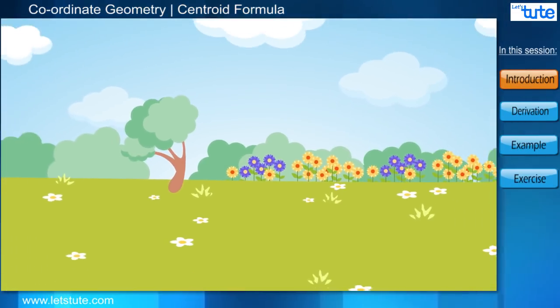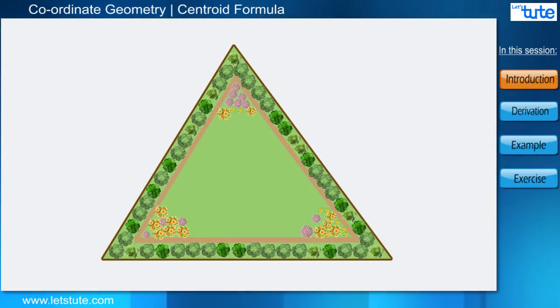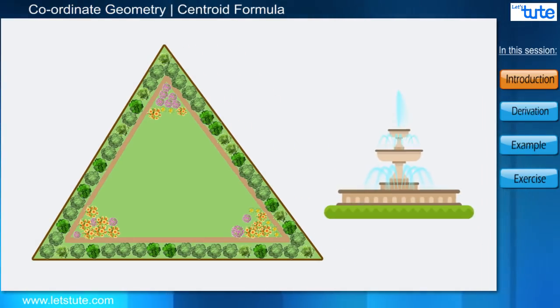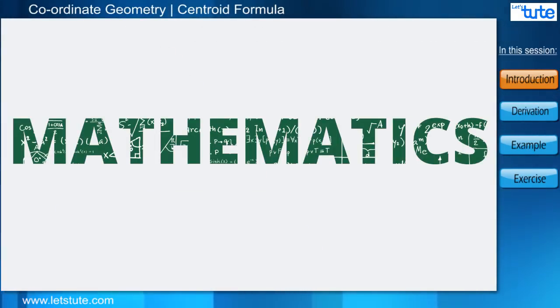Hey friends, there's a beautiful garden near my house which is triangular in shape. We decided to build a fountain in the center of the garden, but as we already know that the garden is triangular in shape, how can we find the center of the garden?